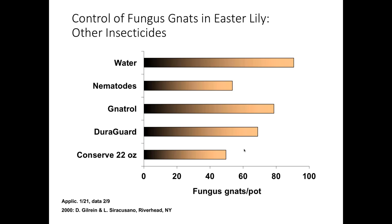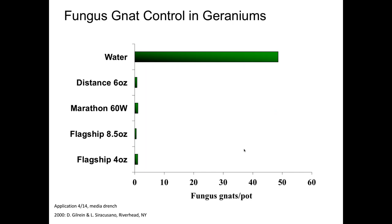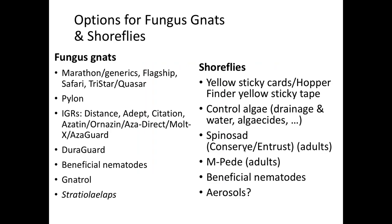In a third trial in geraniums, we looked at the neonicotinoids Marathon and Flagship at two different rates, compared to Distance at the six-ounce rate. We got very good control with all of these treatments. It's good to see there are a number of very good options for controlling fungus gnats. Let's talk a little bit about mites on bulbs — there are three main kinds of below-ground mites I've had questions on.